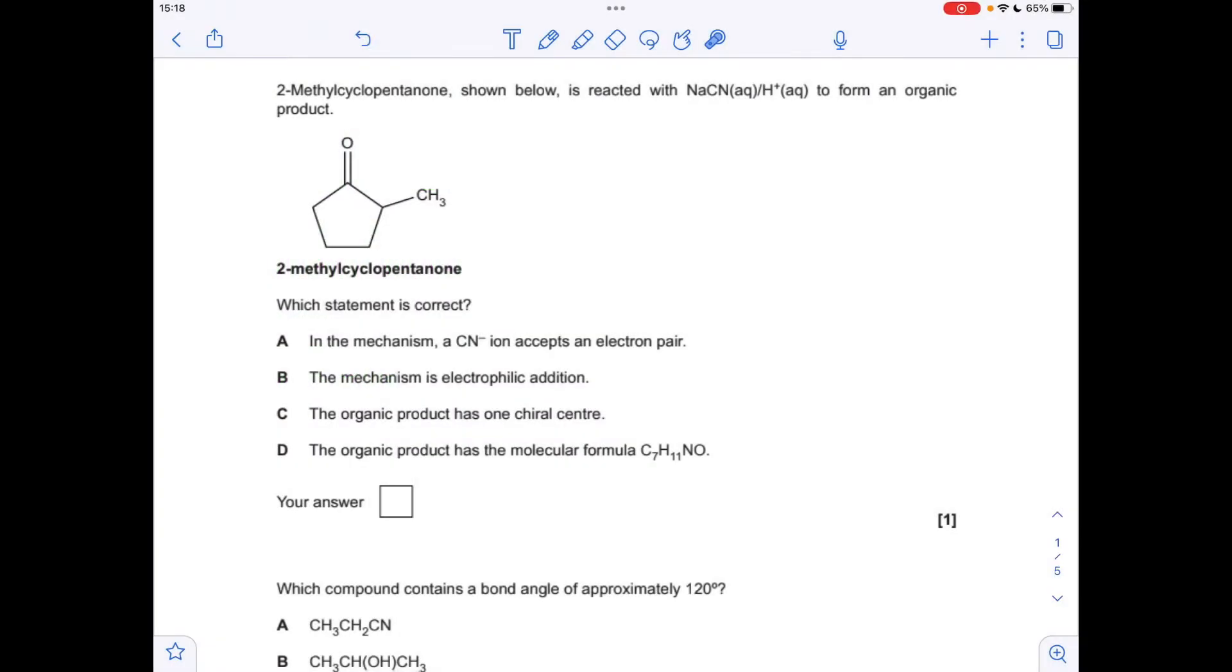Okay, so first question. We've got some information about this reaction of 2-methyl-cyclopentanone with this mixture of sodium cyanide and acid. Which is the correct statement? In the mechanism, the CN ion accepts an electron pair. No, that's wrong because the CN ion donates an electron pair. It's a nucleophile.